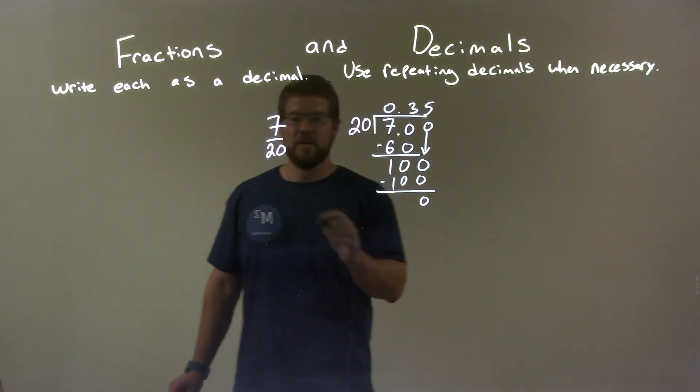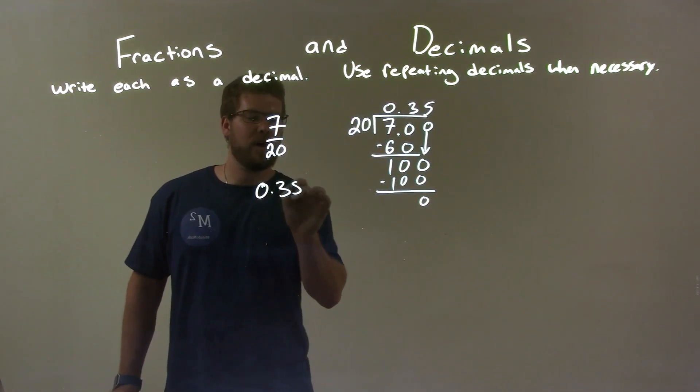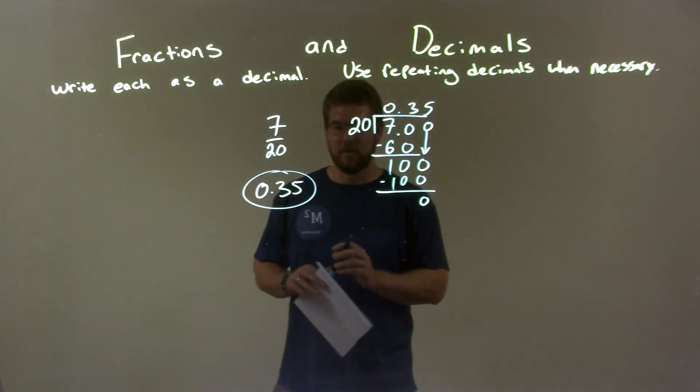And so we have our final answer here, 0.35, and that's our decimal answer for 7 over 20.